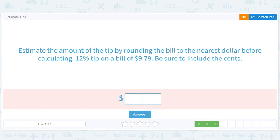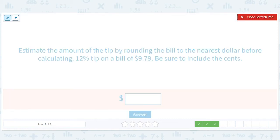Estimate the amount of the tip by rounding the bill to the nearest dollar before calculating 12% on a bill of $9.79. This is great because I love working with $10 and you should too. We're dealing with $10. A 12% tip is going to involve a 12, right? I mean, you're going to multiply 0.12 by 10. That's going to be 120 somehow. And then the number of decimal places is 2. So, it's going to be $1.20.